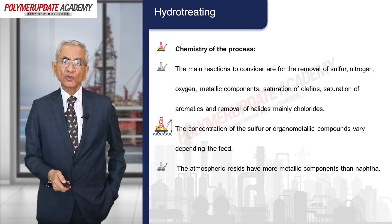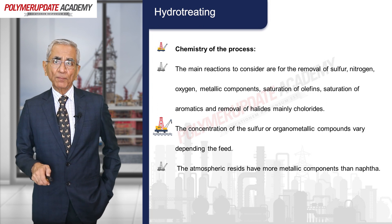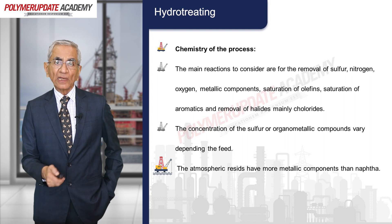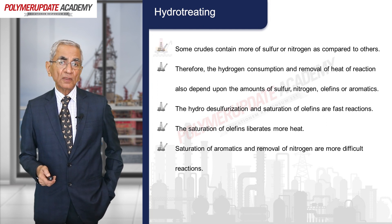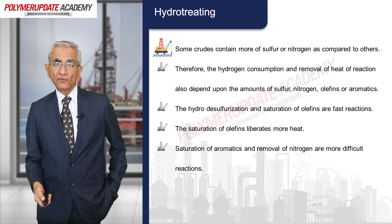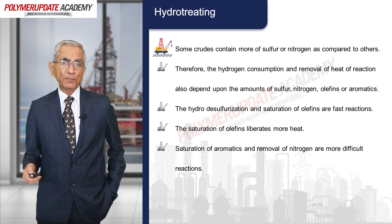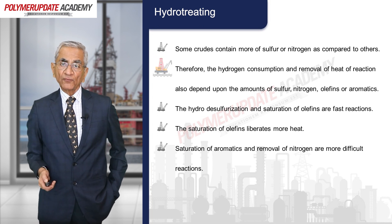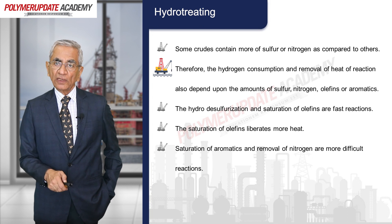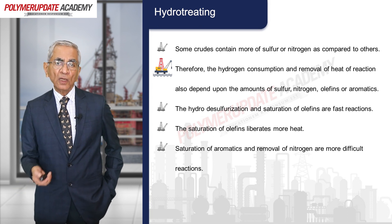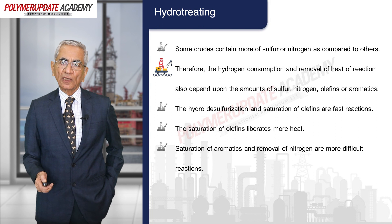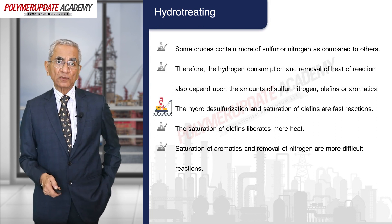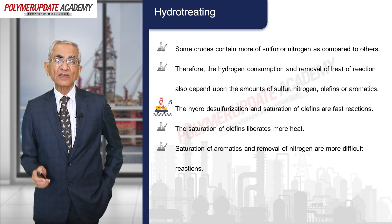The concentration of sulfur or organometallic compounds varies depending upon the feed. Atmospheric residues have more metallic components than naphtha. Some crudes contain more sulfur or nitrogen compared to others, so reactor conditions must be adjusted accordingly. Therefore, hydrogen consumption and removal of the heat of reaction also depends upon the amount of sulfur, nitrogen, olefins, or aromatics present in the feed.